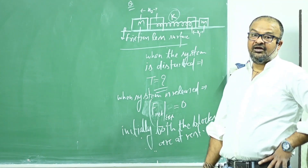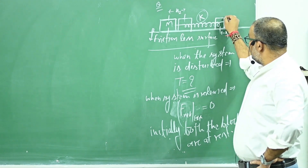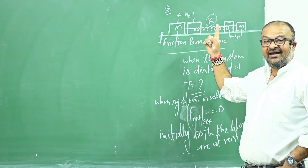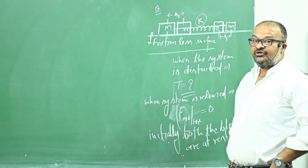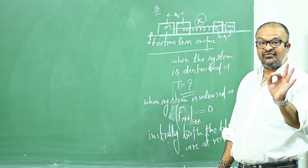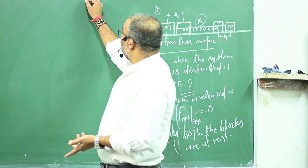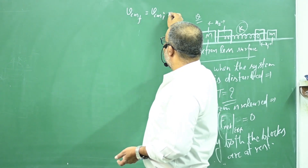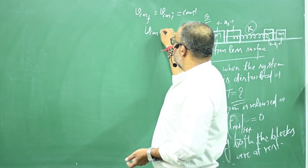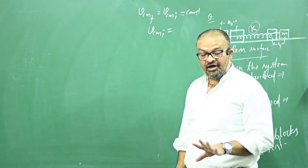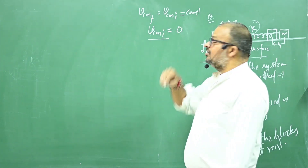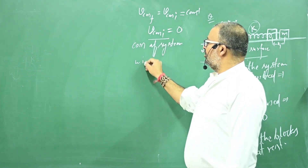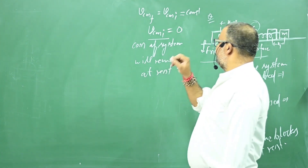Initially, both the blocks are at rest. This block is at rest, this block is at rest. Net force on the system is zero, which means net acceleration of the system will be zero. Therefore, the velocity of the center of mass will remain constant, and the initial velocity of the center of mass is zero.